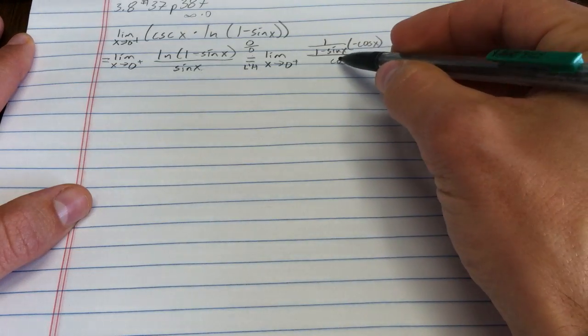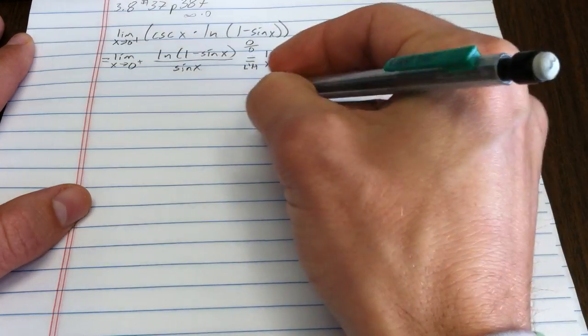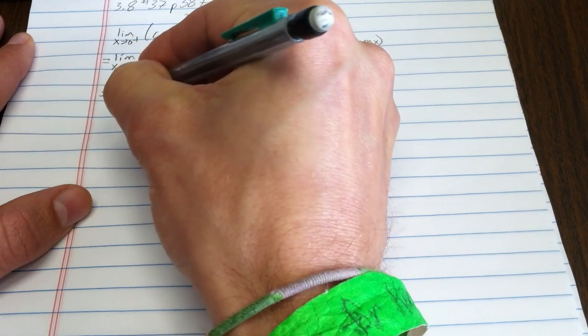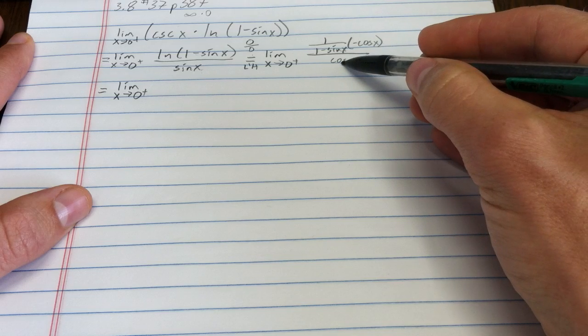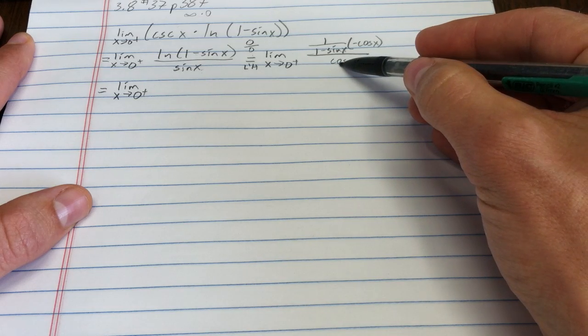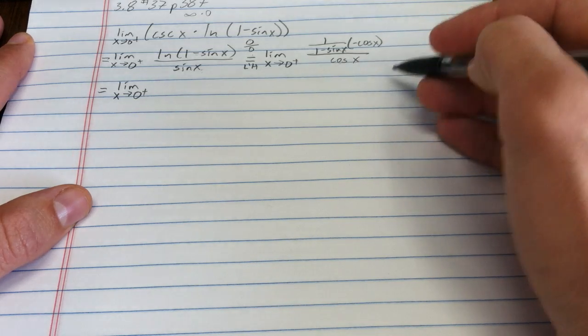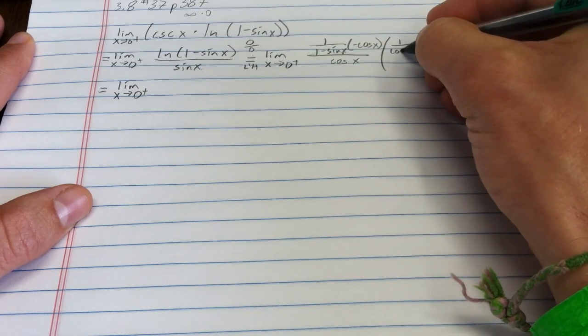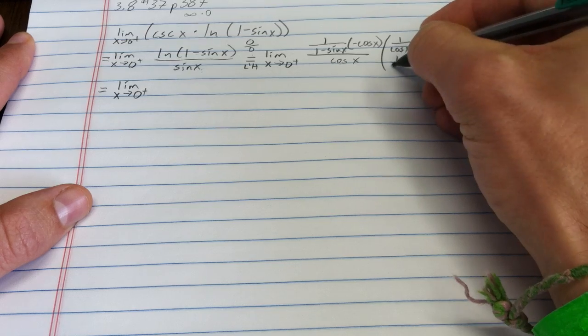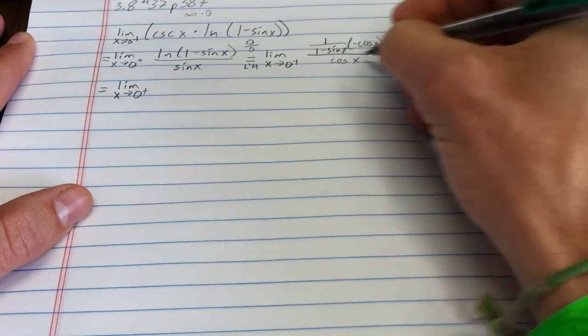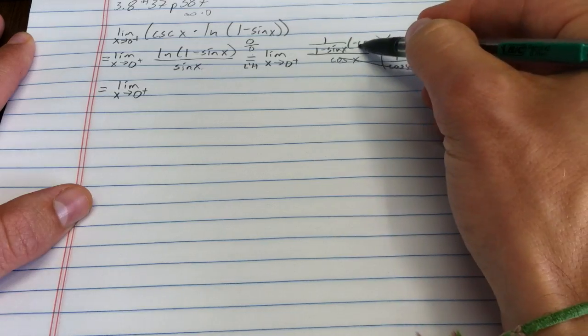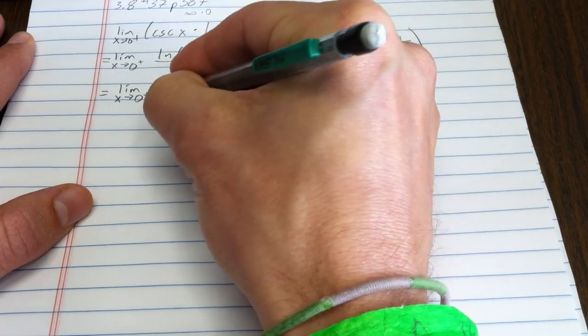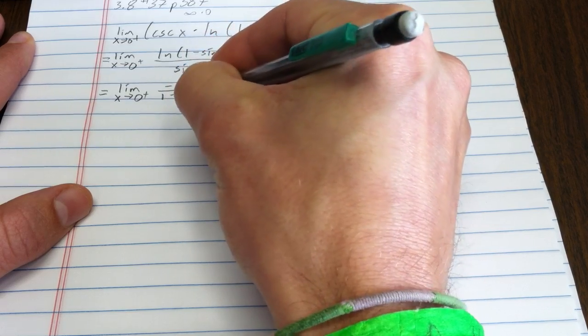Before I mess with it too much, let's get rid of my fraction within a fraction. If I multiply by 1 over this, so I want to get rid of it, so let's multiply by 1 over cosine x. Those will cancel, and I get negative 1 over 1 minus sine x.